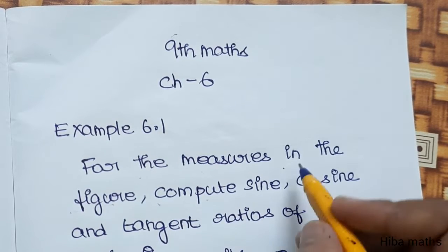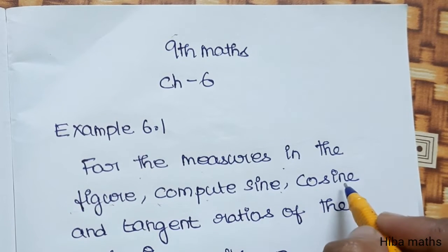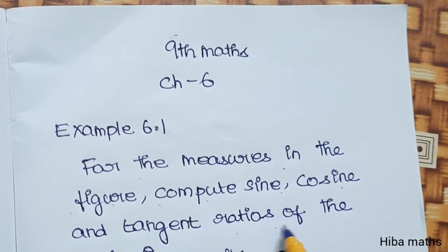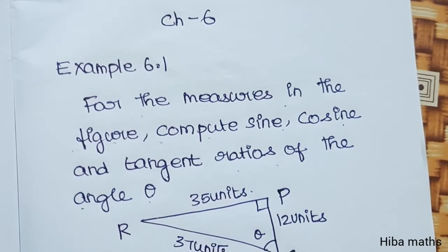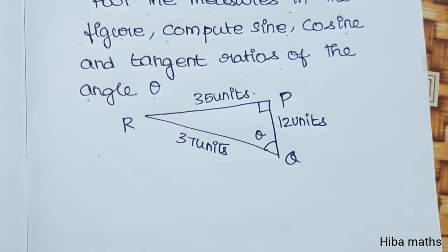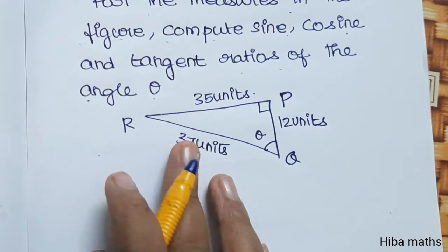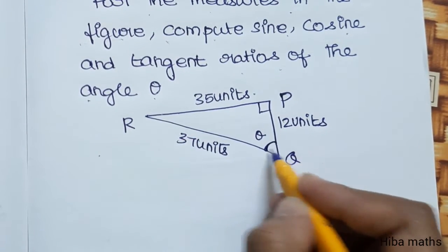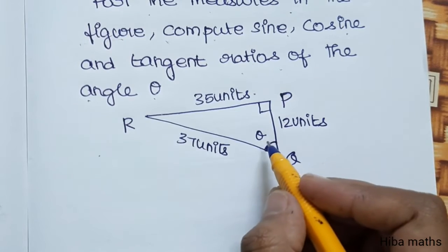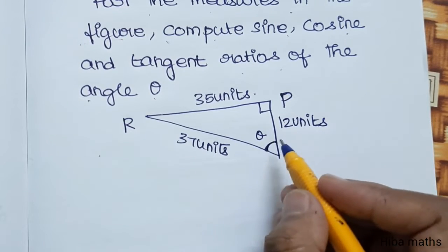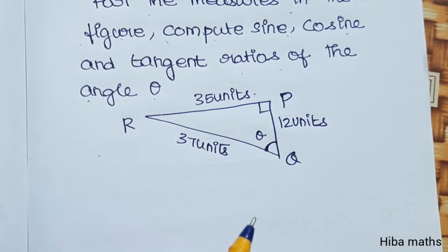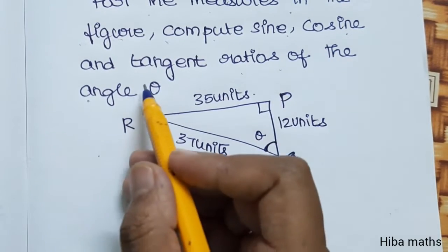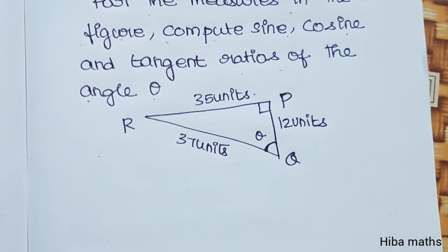We need to compute sine, cosine and tangent ratios of the angle theta. We can write the right angle triangle where theta is mentioned. Now we find the sine value, cosine value, and tangent value.